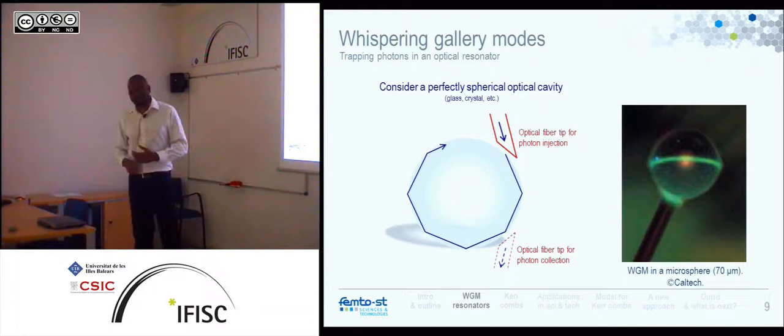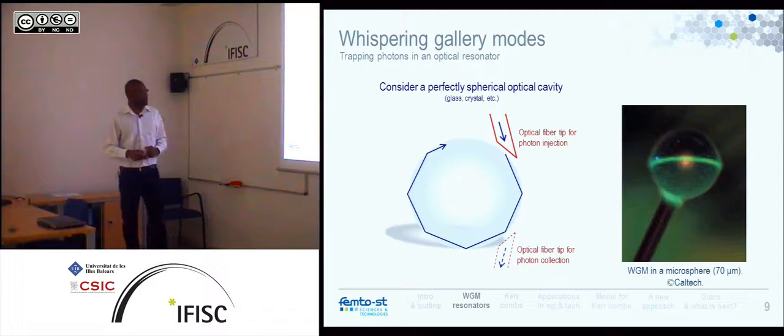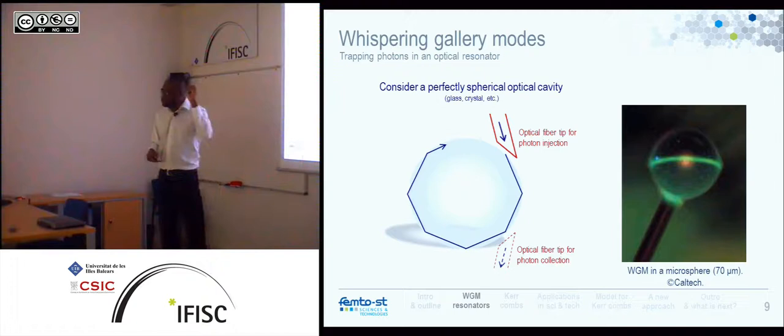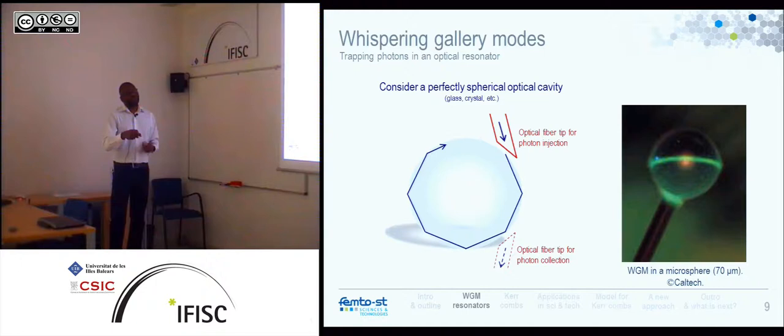You can actually observe this. Here, for example, is a picture where you can see a whispering gallery mode — a WGM. You can see the tip of a fiber, about 70 microns, roughly the size of a human hair. They heat the tip of a fiber, and when it melts, by capillary tension it makes a sphere. And here by fluorescence, you can see a whispering gallery mode — this green light traveling along the equator of that spherical resonator.